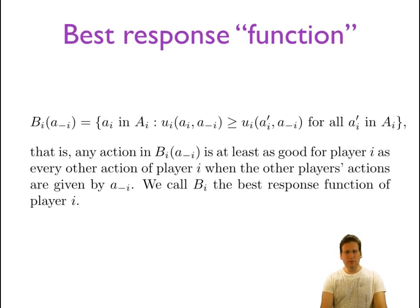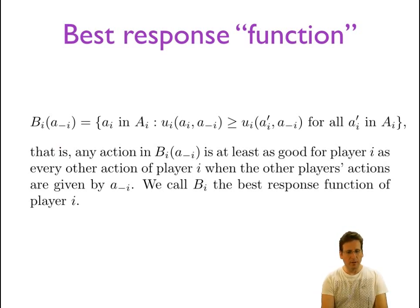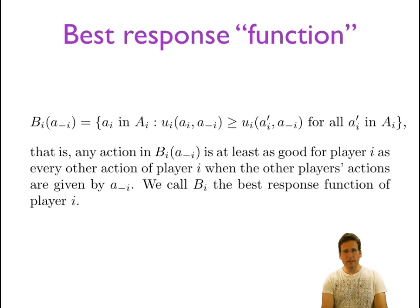There's another way to formulate Nash equilibrium using the notion of a best response function. A best response function for each player tells us which action choices of that player would maximize the player's payoff given what other players are doing. So a sub not-i is what other players are doing. The best response function for player i tells us all the action choices in player i's action set for which utility or payoff is maximal — no other action would give a higher payoff given what the other players are doing.